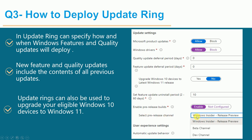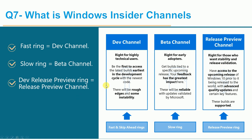When deploying an update ring, you select your pre-release channel type, or you can leave it as 'not configured.' The dev channel is especially for highly technical or VIP users — it gives the earliest access to the latest builds during the development cycle with the newest code, though there may be rough edges and some instability. The beta channel is for a slower rollout.